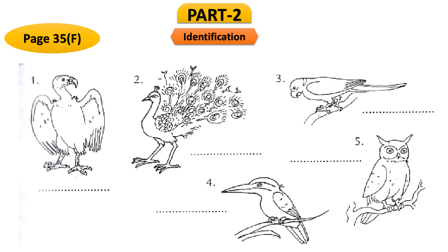Now, please open page 35, question number F. You will see some pictures of animals and we have to identify their names and write them in the blanks. In the left part, the number one animal is known as the vulture. Vulture is a kind of bird.